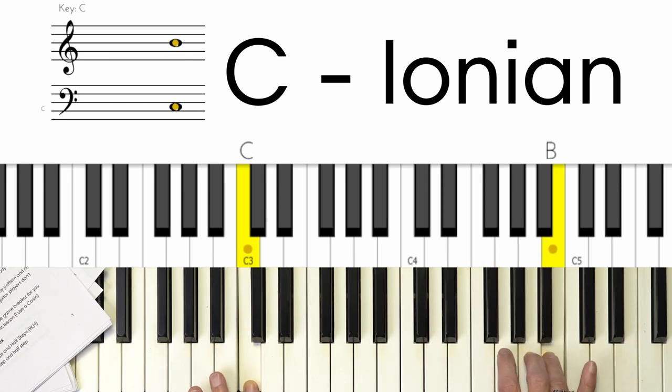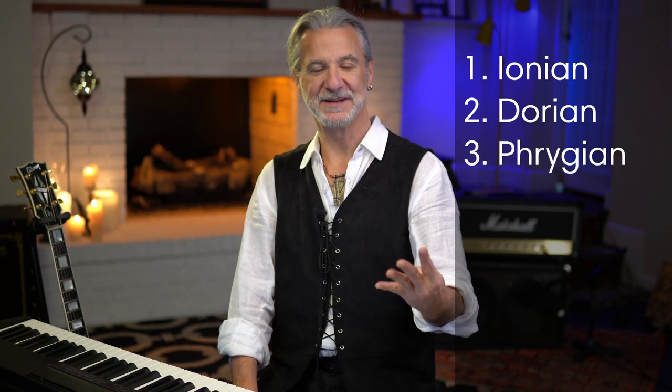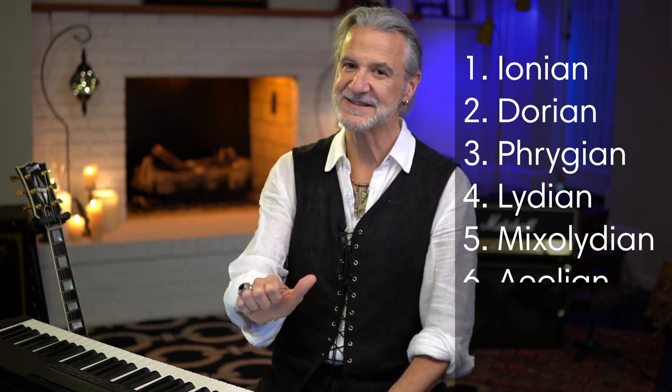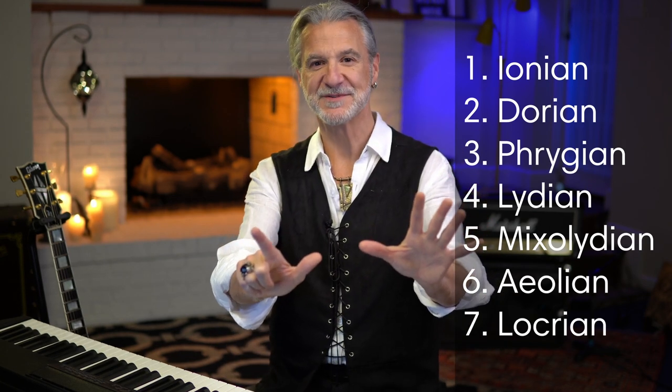The first question we have to answer is: what is a mode? Well, a mode is simply a scale. We're going to focus on the seven basic common modes of the major scale. There will be a little bit of memorization required. The modes are: Ionian (number one), Dorian (number two), Phrygian (number three), Lydian (number four), Mixolydian (number five), Aeolian (number six), and Locrian (number seven).